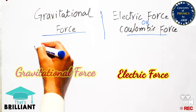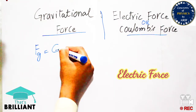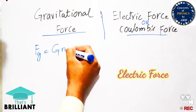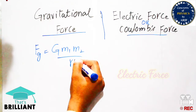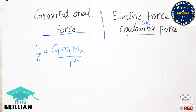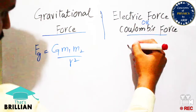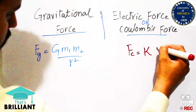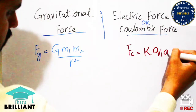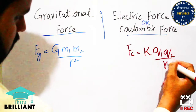As we know, the formula of gravitational force is Fg = G·M1·M2 / R². G is a constant, the force is the product of M1 and M2, and is inversely proportional to the square of the distance. The Coulomb force is Fc = K·Q1·Q2 / R².